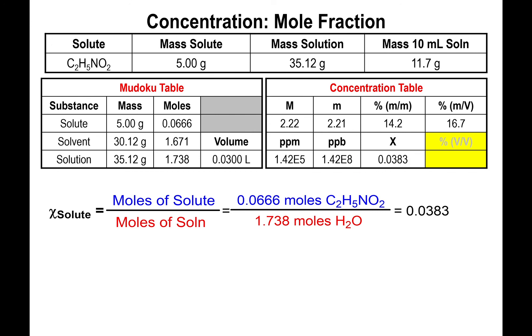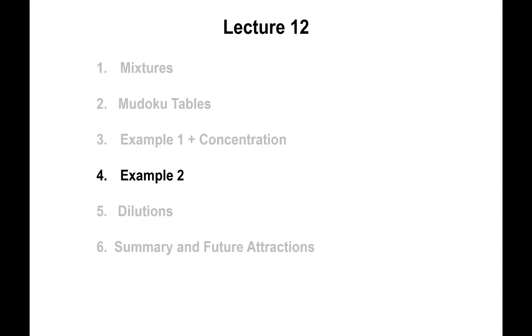All right. And that pretty much about does it. Technically, you could also look at percent volume by volume. But those would be percentages that you would only obtain if you're dealing with liquids being mixed with some other liquid, like alcohol solutions, for instance. All right. So we'll stop right here. And in the next video, we'll show you a second example of Mudoku tables plus concentration, as well as dilutions.